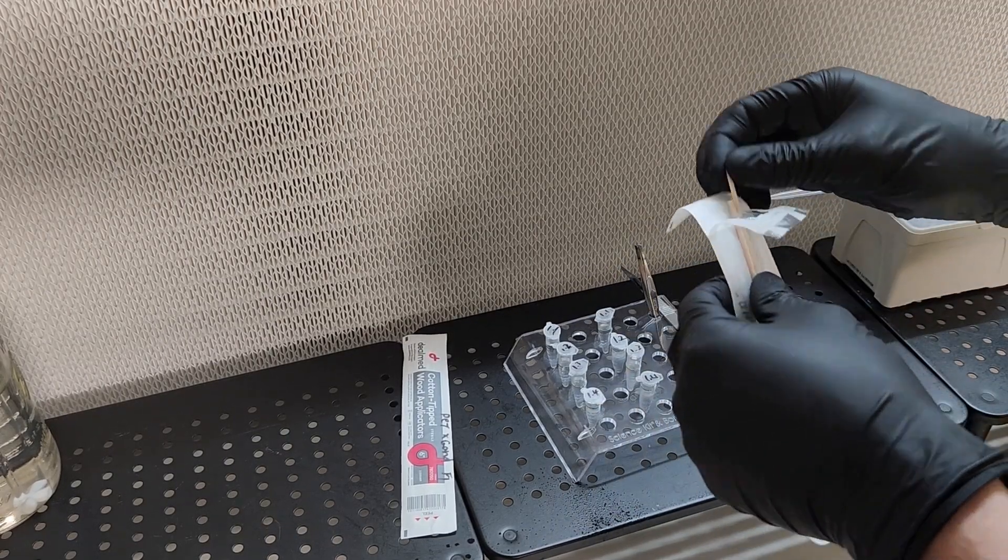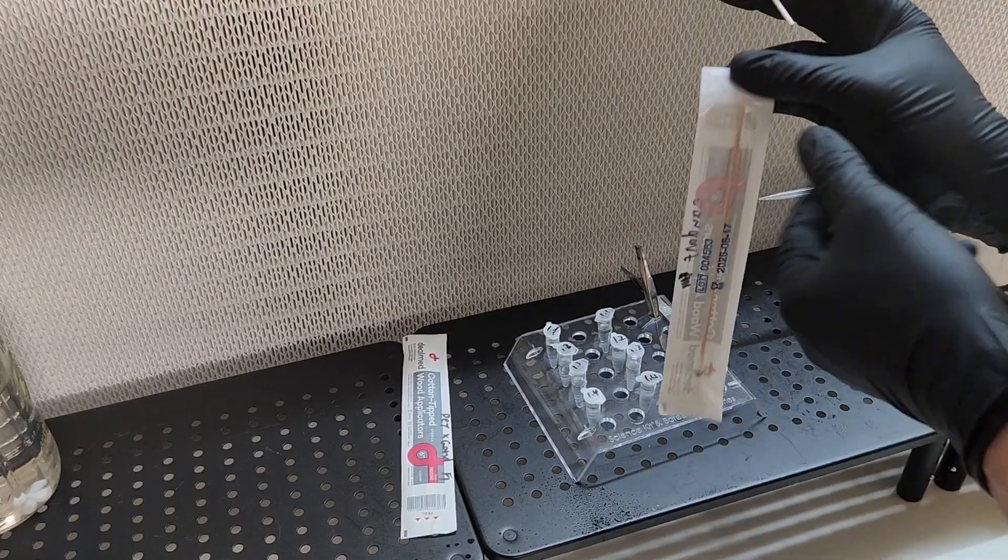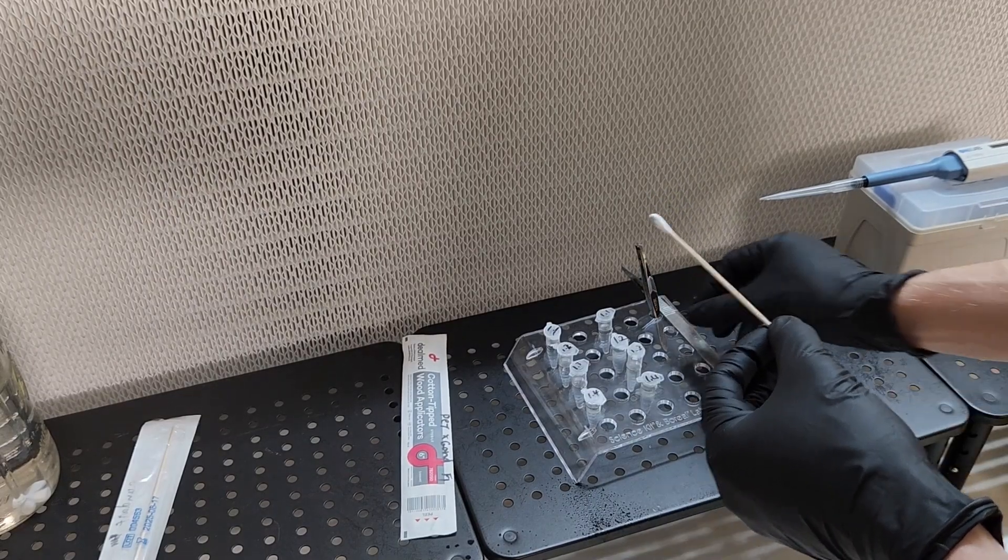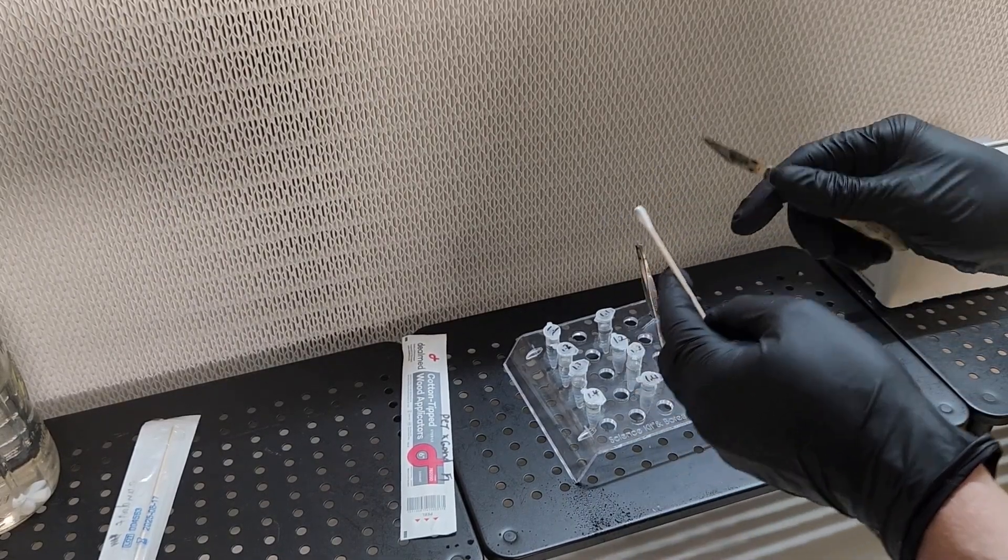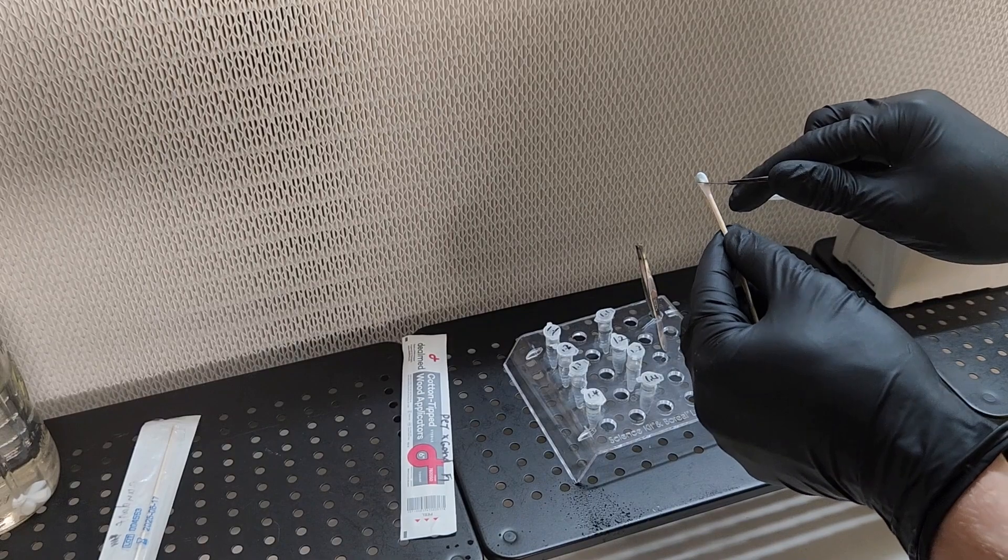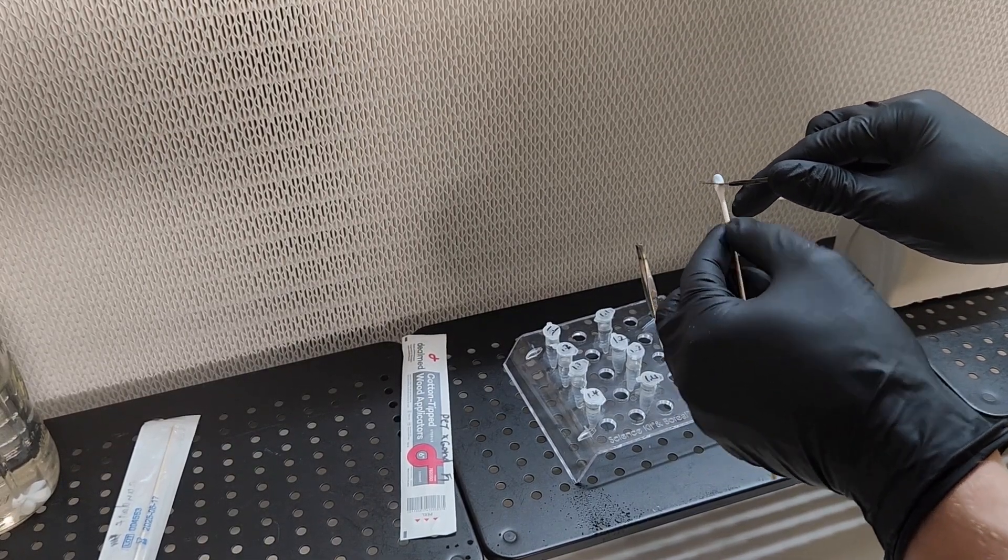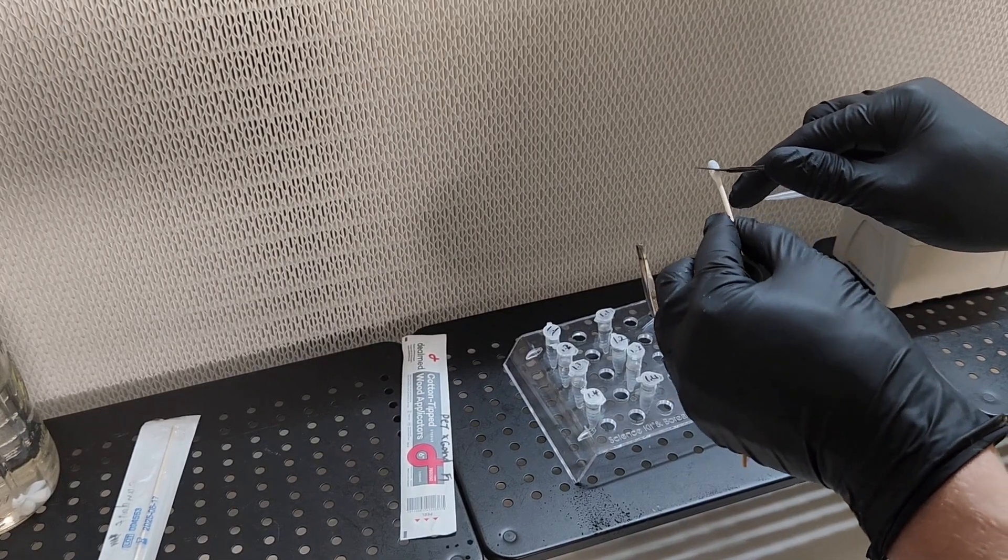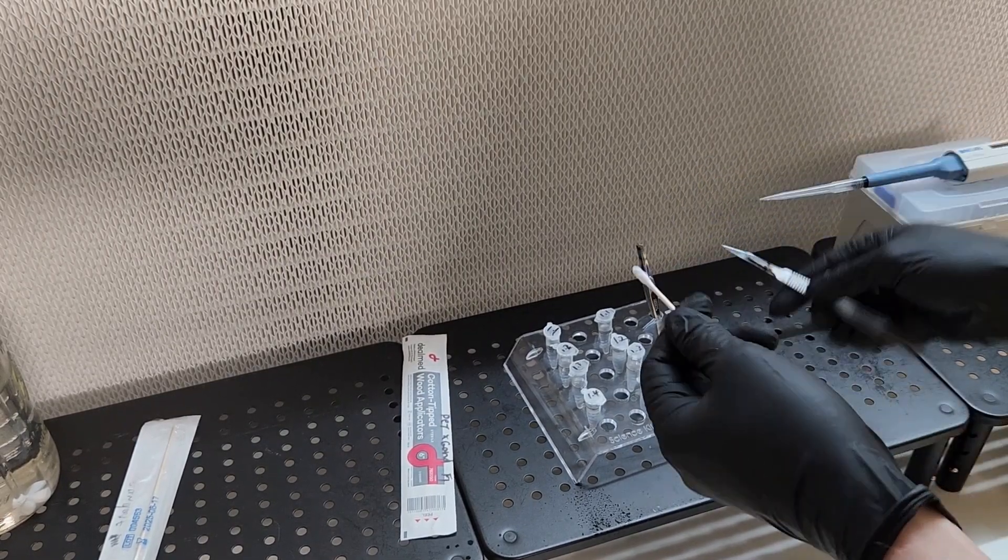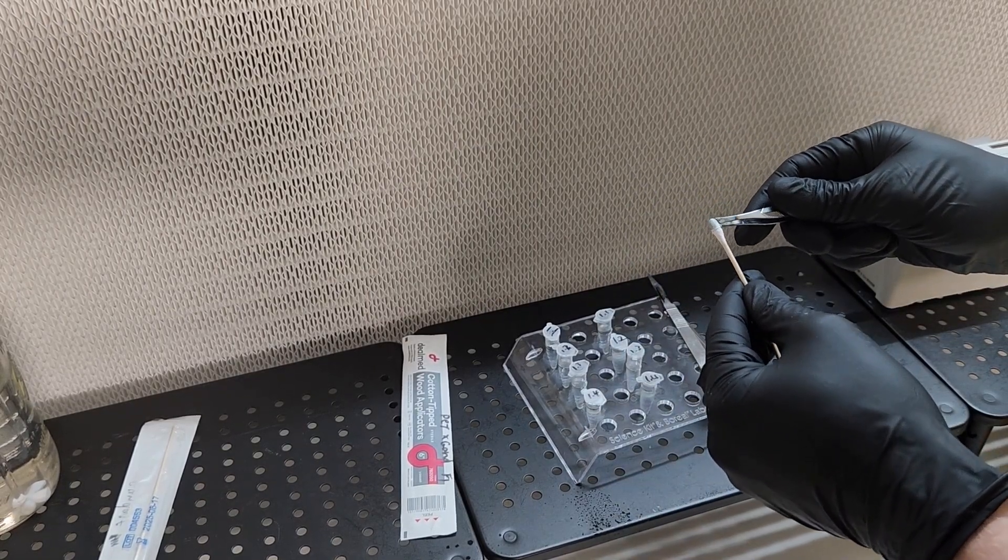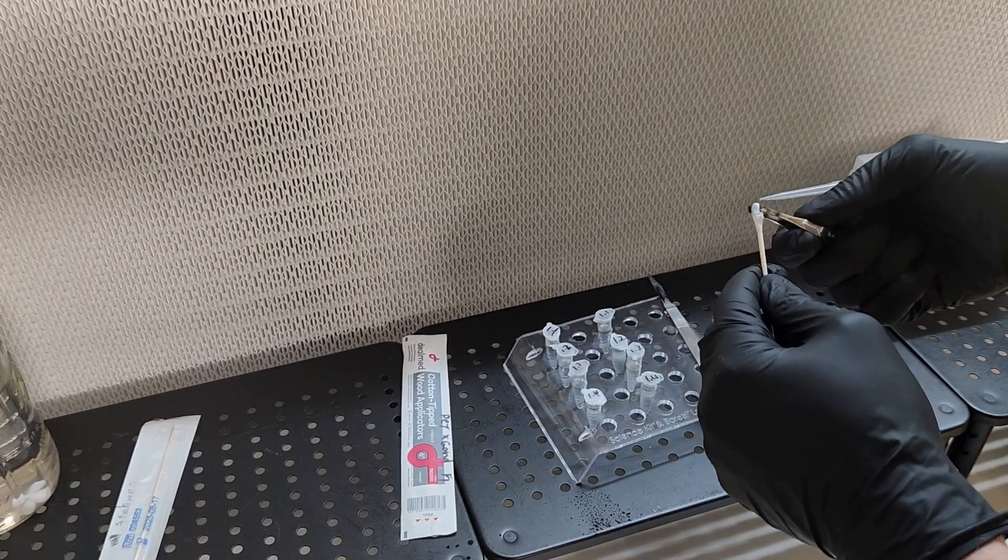Now that we're prepared to do our serial dilutions we are going to simply sterilize a scalpel and our tweezers. Now we are going to gently run the scalpel along the tip of the swab and remove the tip of the swab with the sterile tweezers. After removing the tip of the swab you want to very gently place it into your first micro centrifuge tube. This is the micro centrifuge tube with one milliliter of tween 20 solution in it.